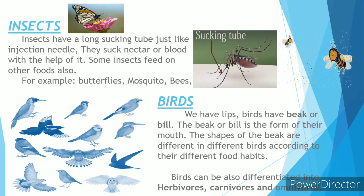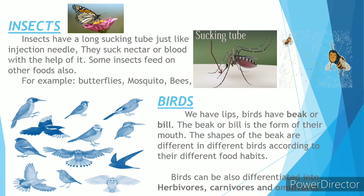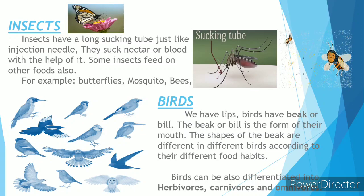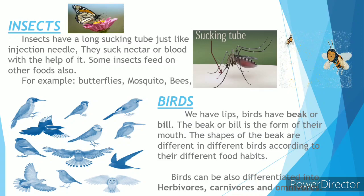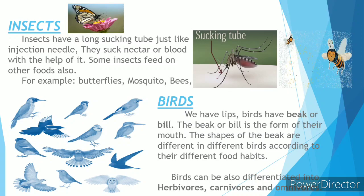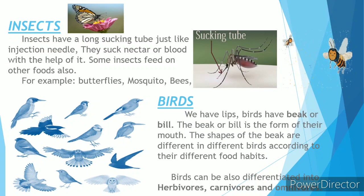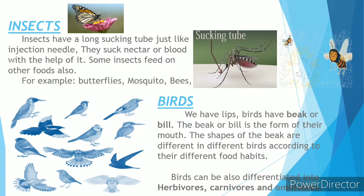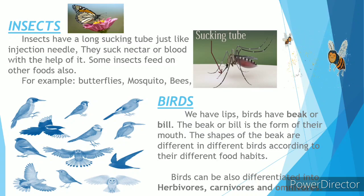Next are birds. Birds are very interesting animals — they do not have teeth and they do not have lips like us. Instead, they have beaks. These beaks or bills are made of a hard material so that the beak acts as their teeth. They catch their prey and tear flesh with the help of this special type of beak.